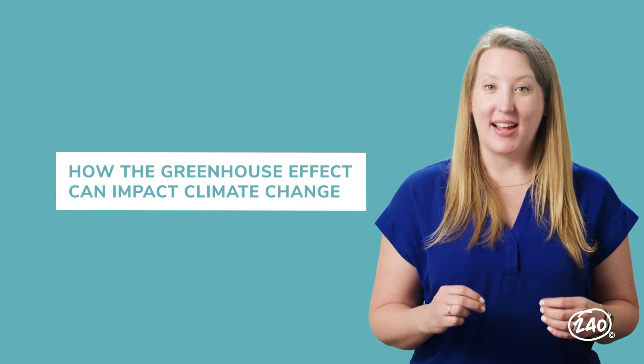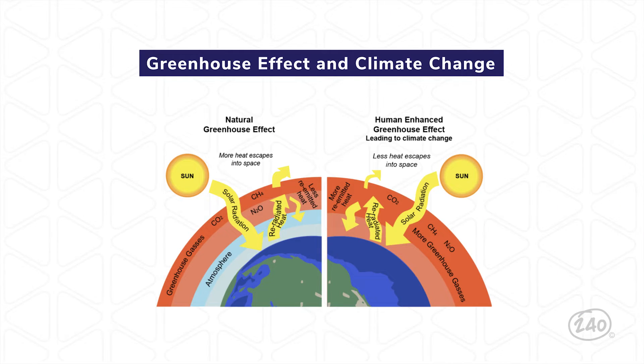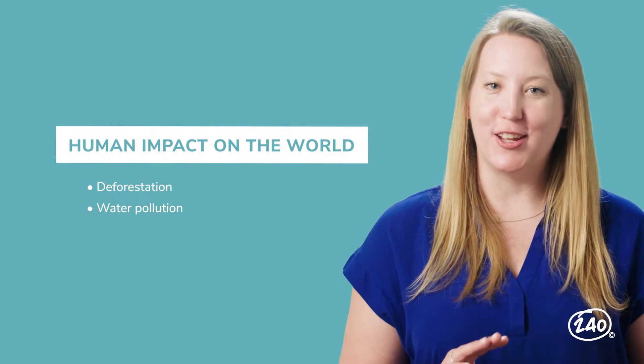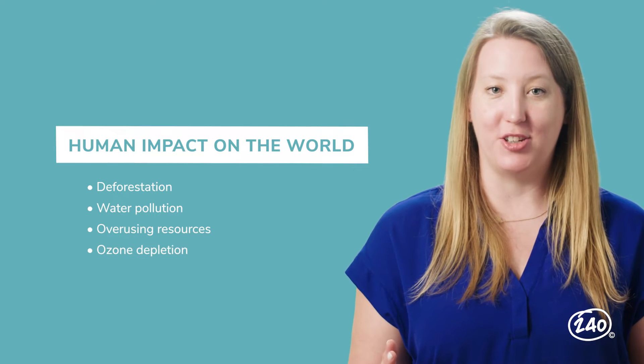Next up: science, technology, and the environment. This section is all about how the actions humans take impact the natural world. There's one big idea here to focus on: how the greenhouse effect can impact climate change. More greenhouse gases released into Earth's atmosphere by human pollutants can cause a greenhouse effect, keeping more of the sun's heat trapped within the atmosphere instead of being released back into space. Other big ideas here include deforestation, water pollution, overusing resources, and ozone depletion. If you need help remembering the finer details of each of those broad topics, we've got all that information in your 240 study guide.